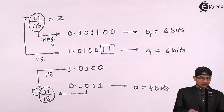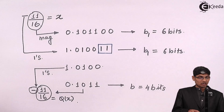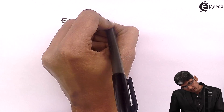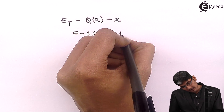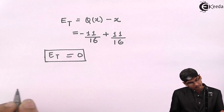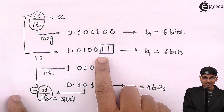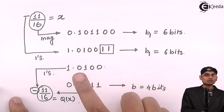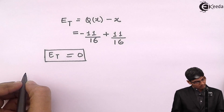Now the truncated value is Q(x) = 11/16. The truncation error e(t) = Q(x) − x = 11/16 − (−(−11/16)) = 0. So the error is 0. The removal of bits occurred in the one's complement representation, but the actual magnitude removed was zero, so there was no error introduced.